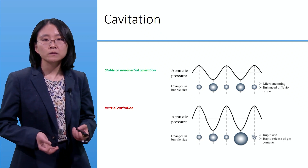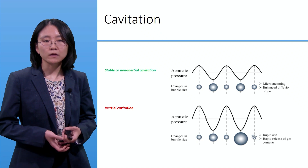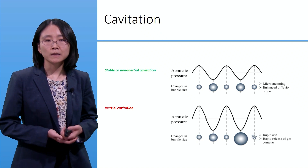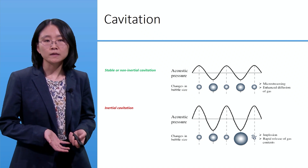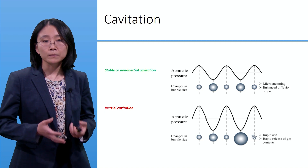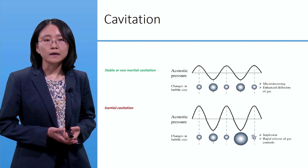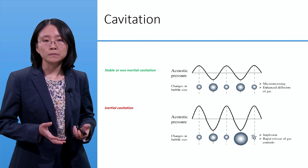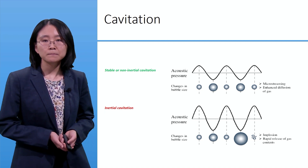Stable cavitation describes a change in bubble size without collapse, and this creates mechanical forces on the walls of the capillaries that results in increased blood-brain barrier permeability.